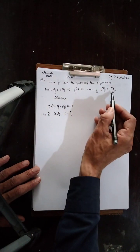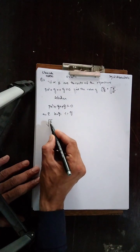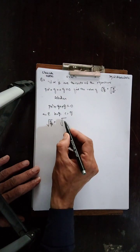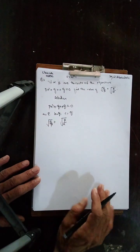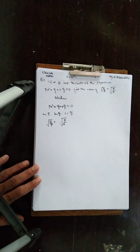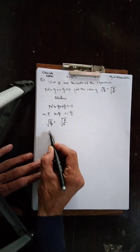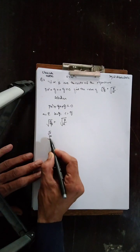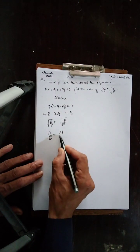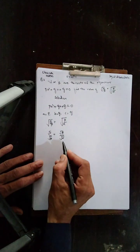اب ہمیں جس کی value find کرنی ہے اسے simplify کریں گے: √(α/β) + √(β/α)۔ یاد رہے multiply اور divide میں اگر ایک radical ہے تو دونوں کو الگ الگ radical دے سکتے ہیں۔ تو یہاں α کو radical الگ دیں گے اور β کو radical الگ دیں گے۔